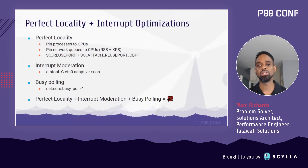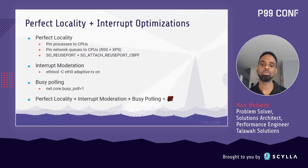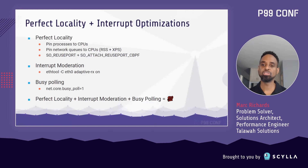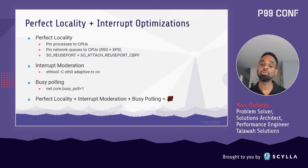Newer kernels have the option to distribute connections using a custom BPF program. Using this option, we can guarantee that the same CPU that handled IRQ processing will also be used when the data gets passed to the user space application, and thus we're able to preserve the silo.